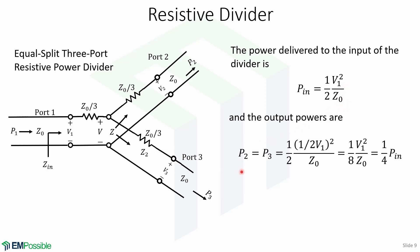And the output powers P2 and P3 are the same, and they're equal to one half of one half V1 squared over Z0, which is equal to one half of the power delivered. Thank you.